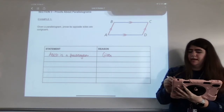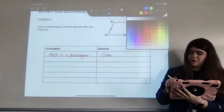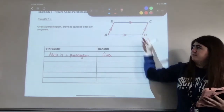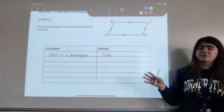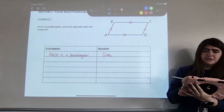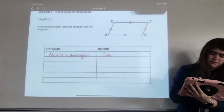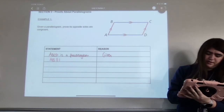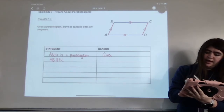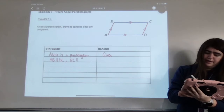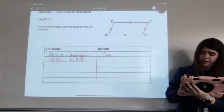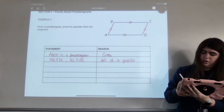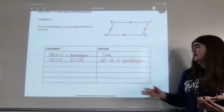Next, by the definition of a parallelogram, I know that I have two sets of parallel sides — it's also marked in there, so you could technically say 'given' on that line too. So line two: AB is parallel to DC, and BC is parallel to AD, and that is by the definition of a parallelogram — which could also be given.